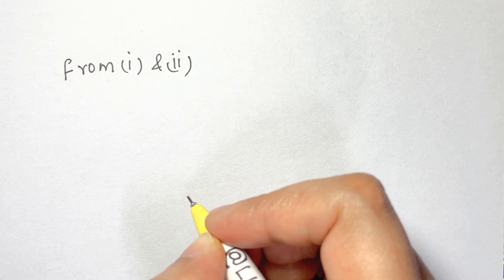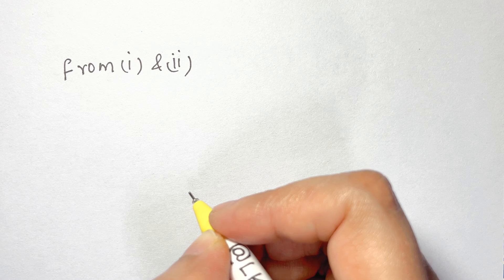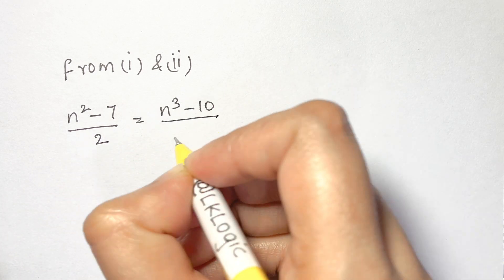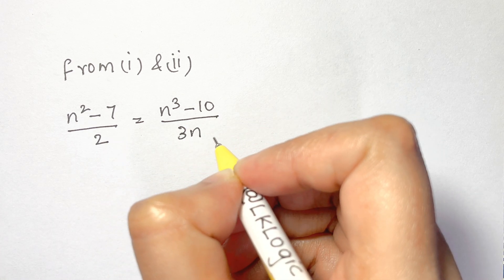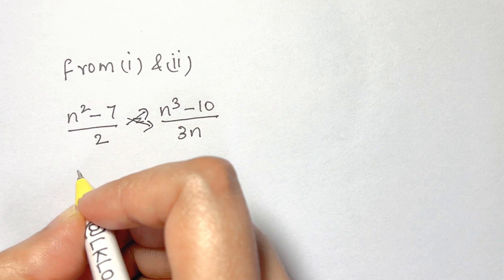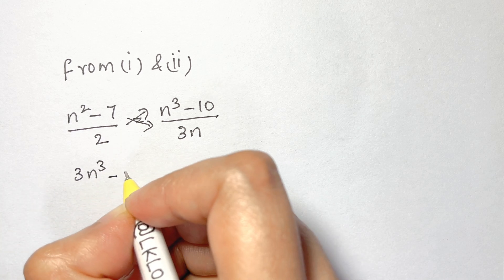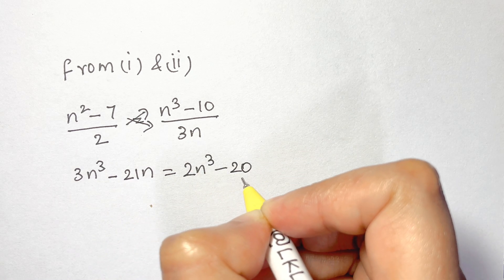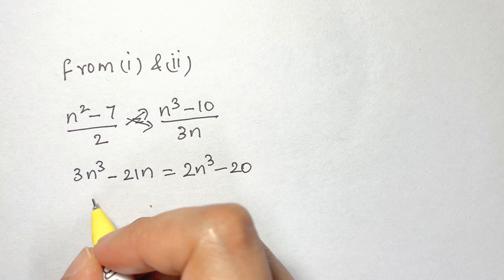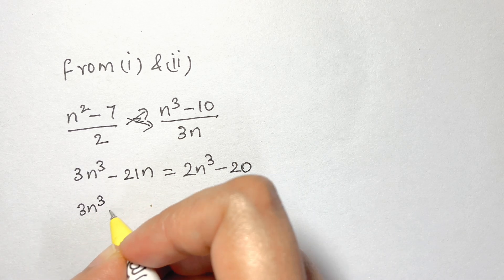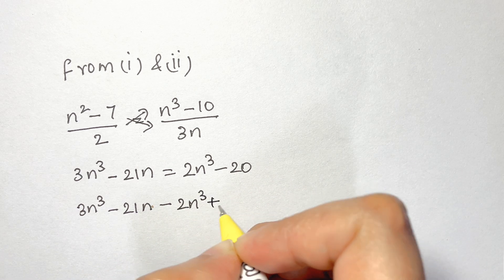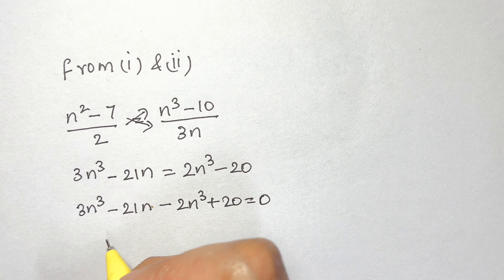Now we equate equation 1 and equation 2: n squared minus 7 over 2 equals n cubed minus 10 over 3n. Cross-multiplying gives 3n cubed minus 21n equals 2n squared minus 20. Bringing all terms to one side: 3n cubed minus 21n minus 2n cubed plus 20 equals 0.